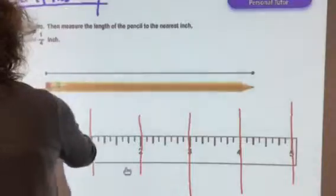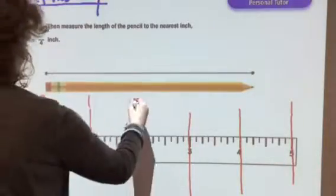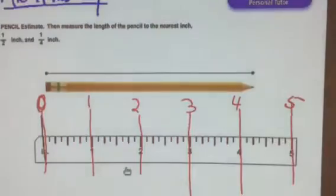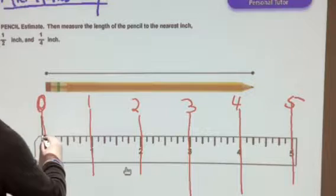We have one—we start at zero—one, two, three, four, five. Let's see how many pieces this number line, this ruler is broken into. I'm gonna do the denominator first.